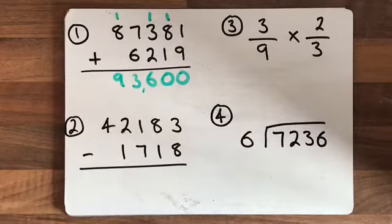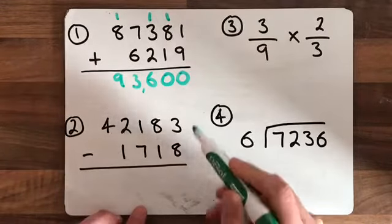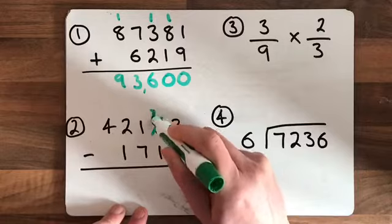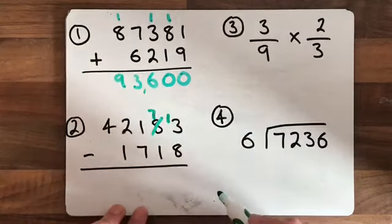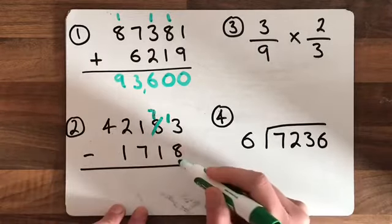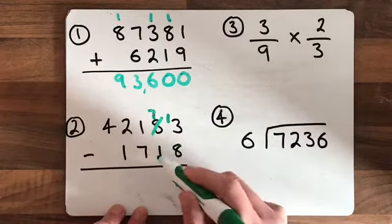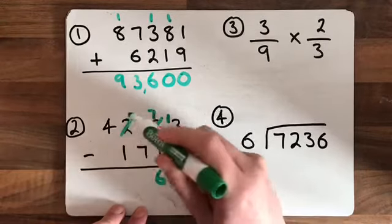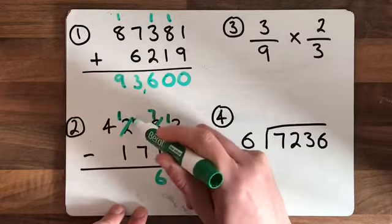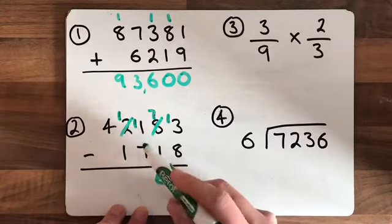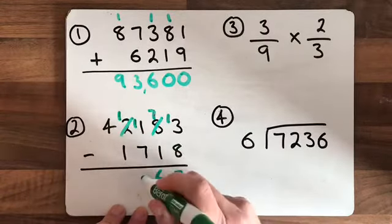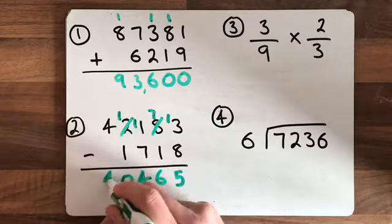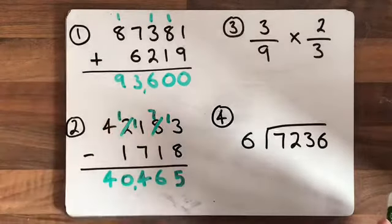Moving on to number two, the subtraction. Three take away eight — we can't do this, so we need to come over to the tens column to take a ten off. This eight in the tens now becomes seventy; this ten comes over to turn the three into thirteen. Thirteen take away eight is five. Seven take away one is six. We can't do one take away seven, so we exchange again: the two becomes one, the one comes over to make eleven. Eleven take away seven is four. One take away one is zero. Four take away nothing is four. Adding the comma three from the end: forty thousand, four hundred and sixty-five.